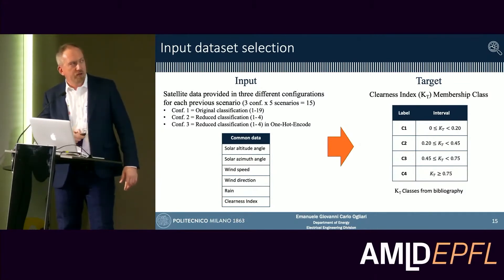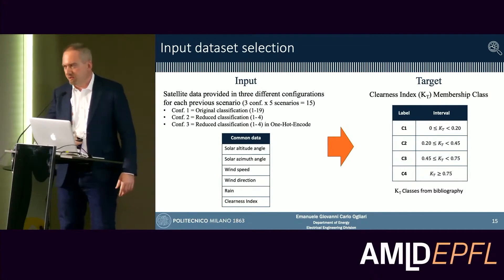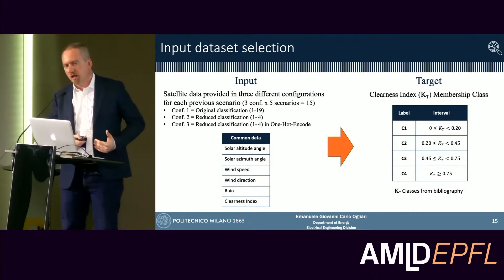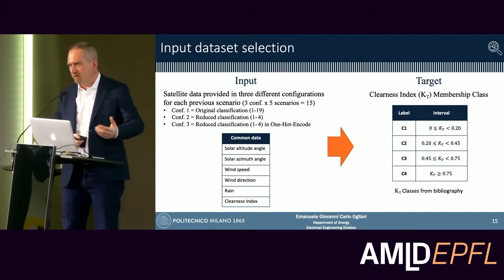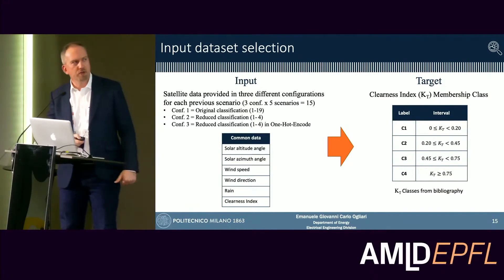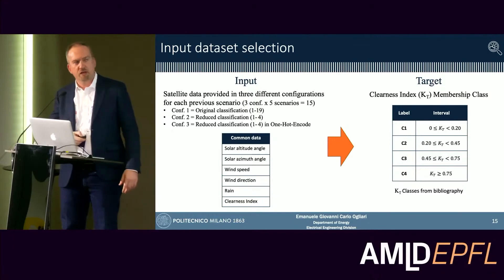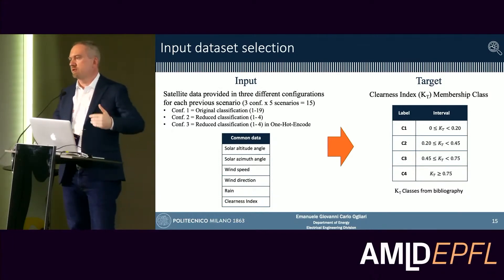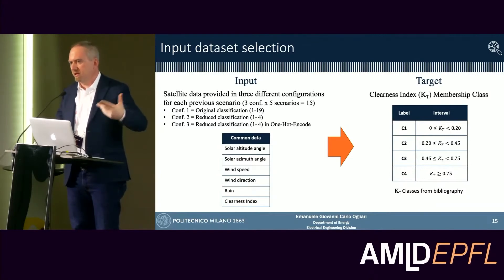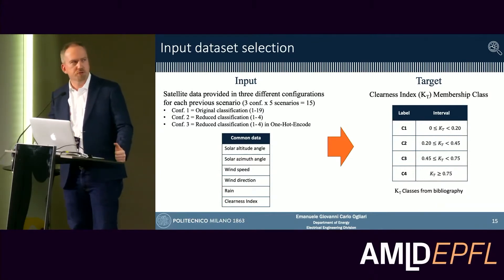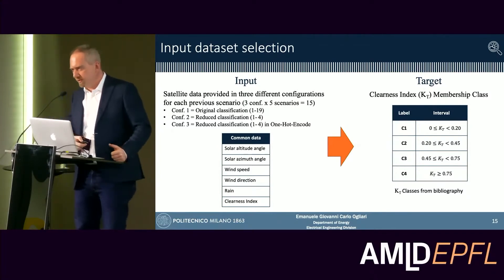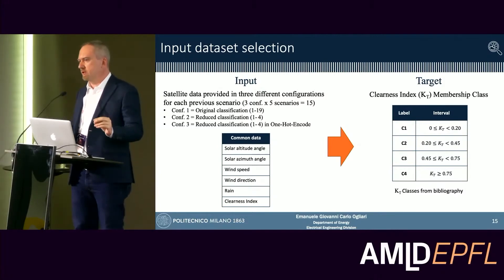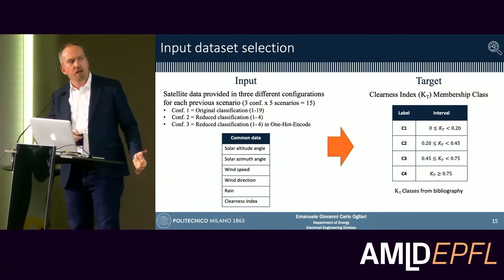Adding the previously mentioned parameters, we assembled the input dataset. Via supervised learning we trained neural networks and random forests to forecast the clearness index classes, which are directly connected to the exploitable solar radiation for power production. This classification is provided by the literature and is highly dependent on the location — for example, desertic areas would require different class definitions.